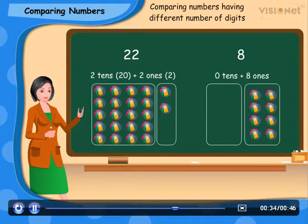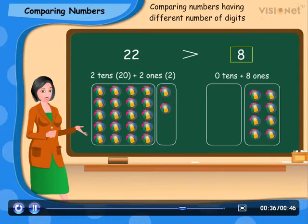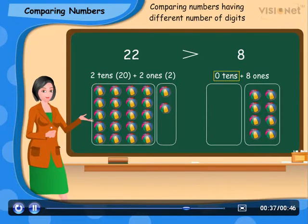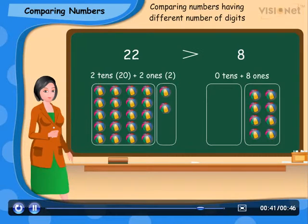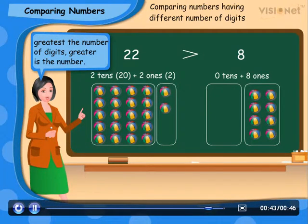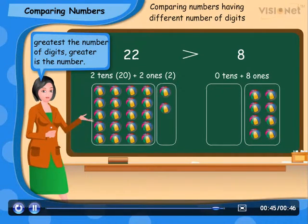So 22 is greater than 8. Therefore, we have learned the important rule that greater is the number of digits, greater is the number.